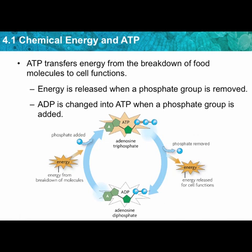Here's the cycle: ADP at the bottom is a low-energy molecule — it's missing a phosphate. Energy from the breakdown of food molecules, as part of cell respiration, adds a phosphate to produce the high-energy molecule ATP — adenosine triphosphate.